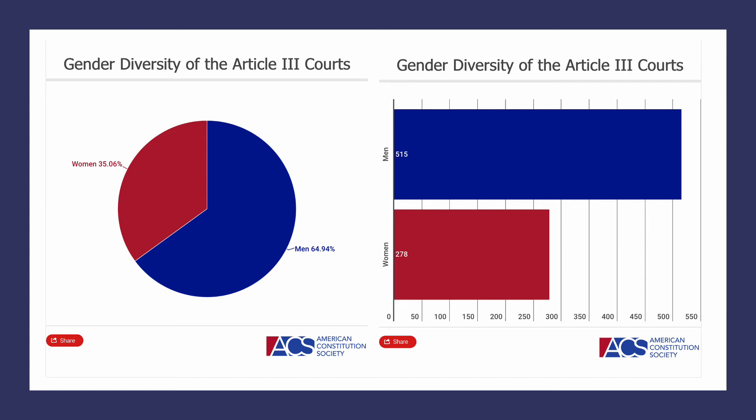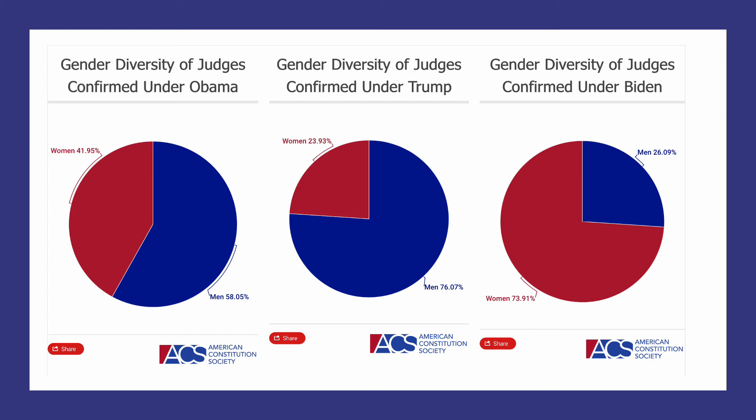Looking at gender diversity, approaching two-thirds of judges on the federal system are men — about 65% — and about 35% female. But it varies significantly by president. Under Obama, 58% of appointed judges were men and 42% women. Under Trump, over three-quarters were men and fewer than one-quarter women. Under Biden, it's the other way around — almost three-quarters of his appointees are women and about one-quarter men.